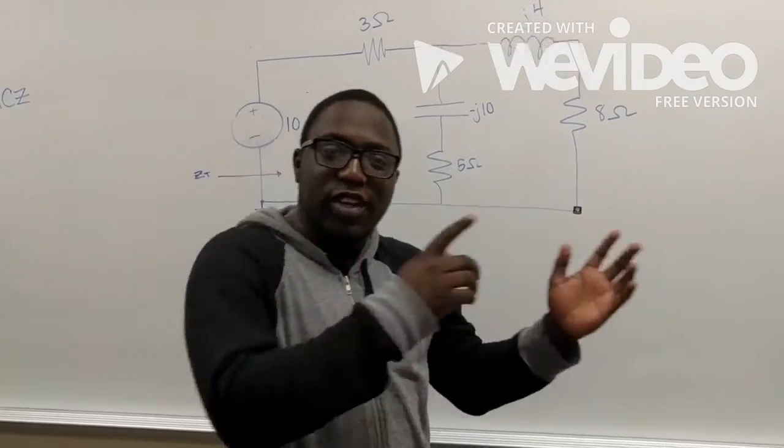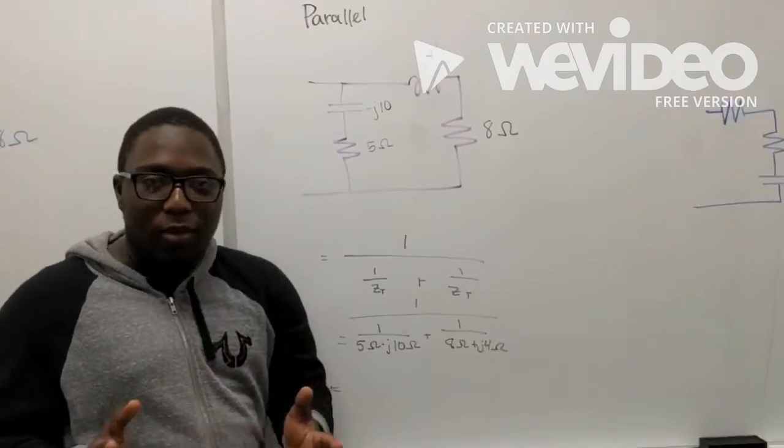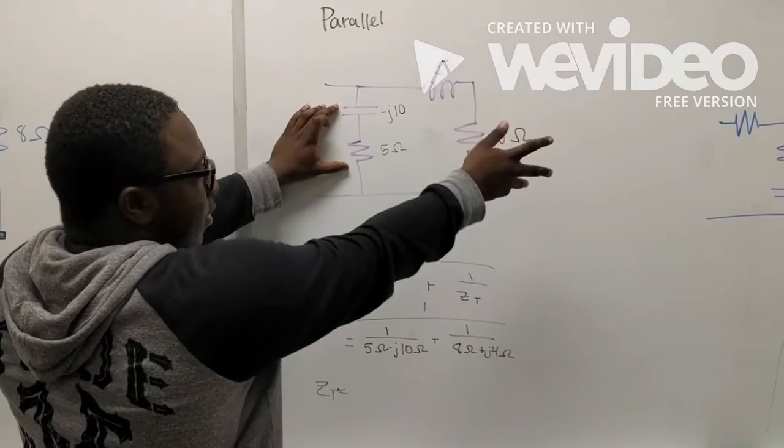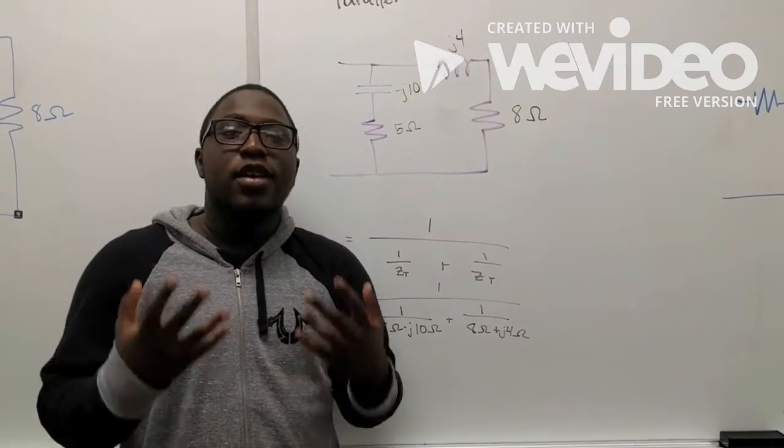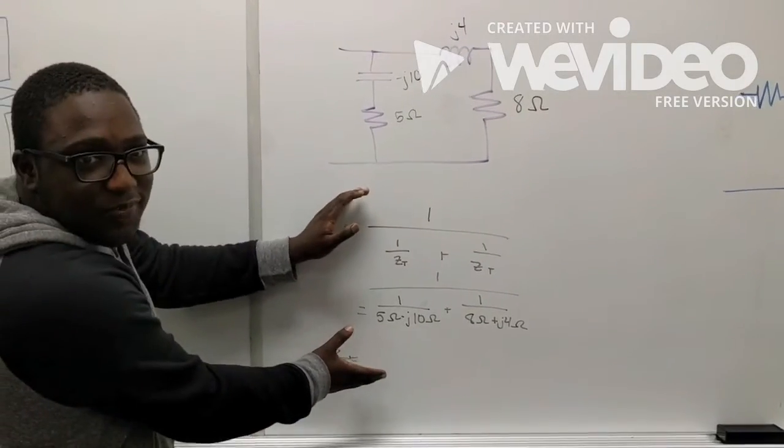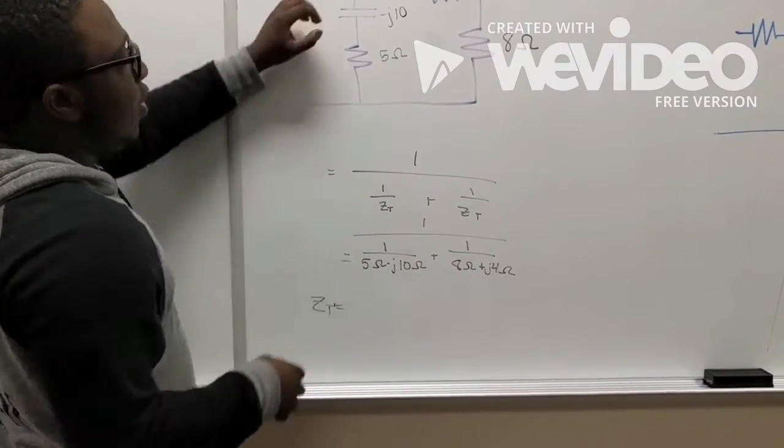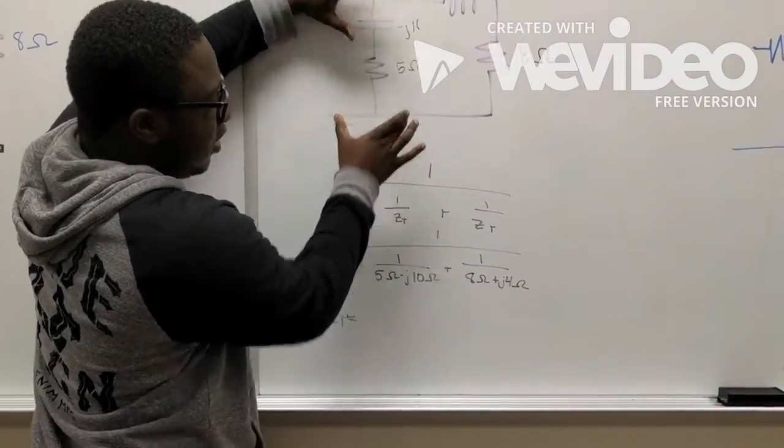We're going to move over here. To do the parallel portion, we have to first focus on the components we stated before. To do that, we do the same thing that we do with parallel resistors, which is down here. As you can see, we say 1 over ZT, which is the total resistance of this section.